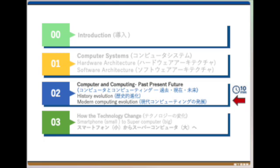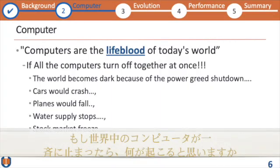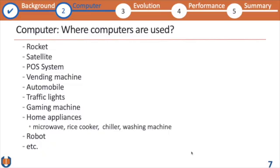Let's move to the desired slide. Think about what would happen if all the computers turned off together right now. The world would become dark because the power grids would shut down. It would crash the whole world — planes would fall down, water supply would stop, and the stock market would be frozen. Nothing could continue in the world.